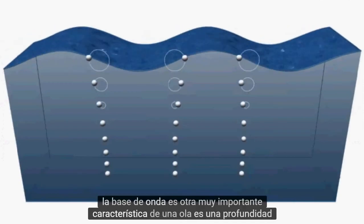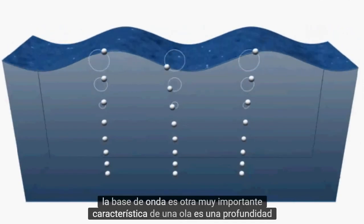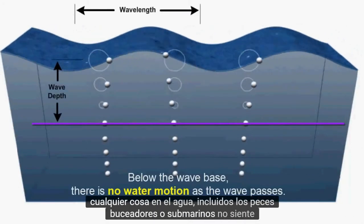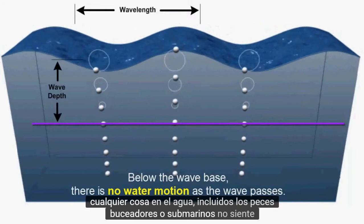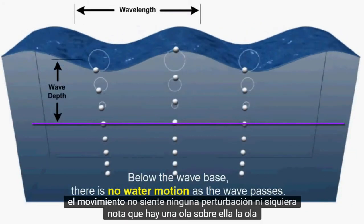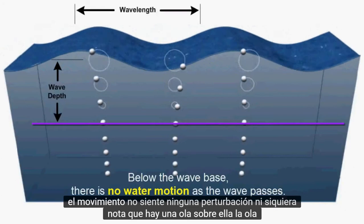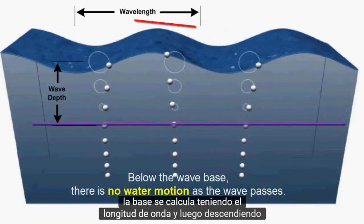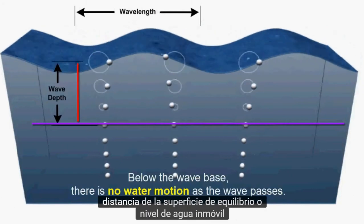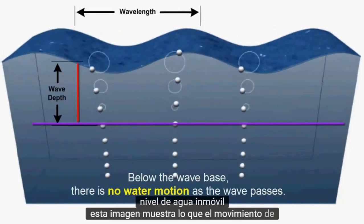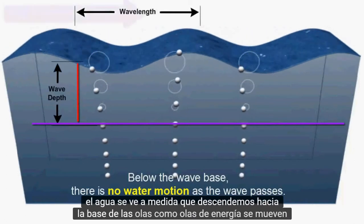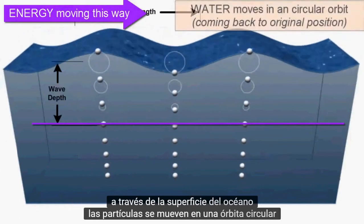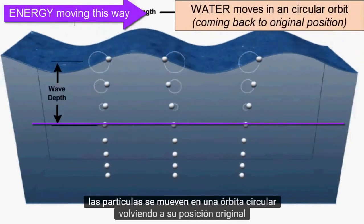Wave base is another very important characteristic of a wave. It is a depth below the wave under which the water — and anything in the water, including fish, scuba divers, or submarines — feels no motion, feels no disturbance, doesn't even notice there's a wave above it. The wave base is calculated by halving the wavelength and then descending that distance from the equilibrium surface or still water level. This image shows what the motion of water looks like as we descend towards the wave base. As waves of energy move across the surface of the ocean, the particles move in a circular orbit returning to their original position.